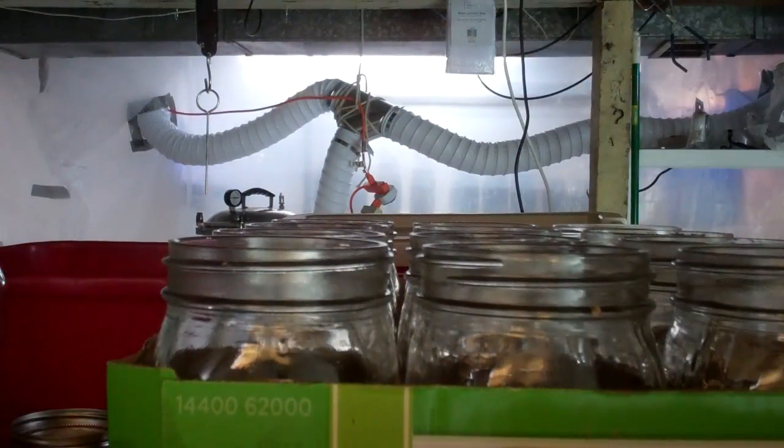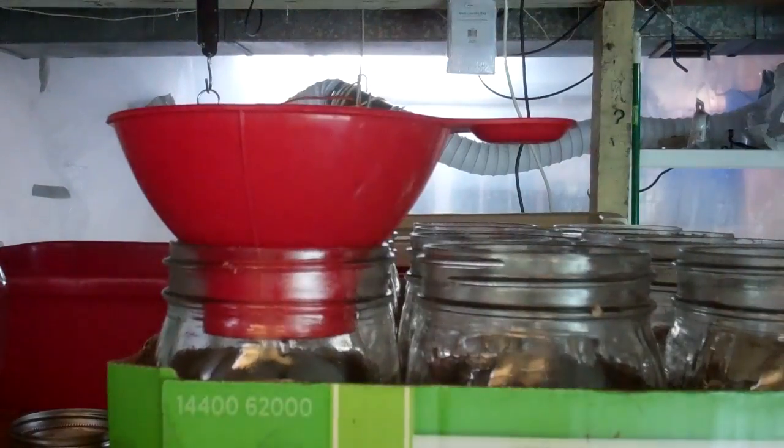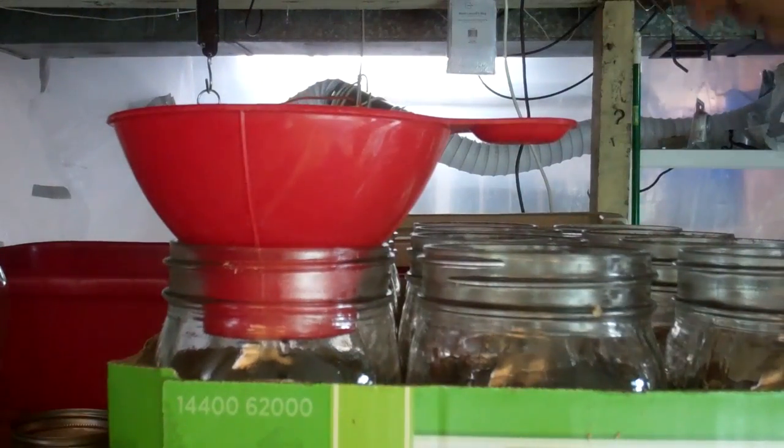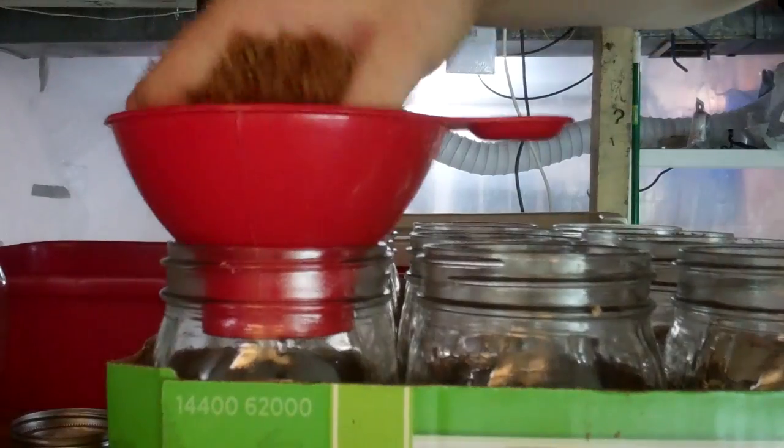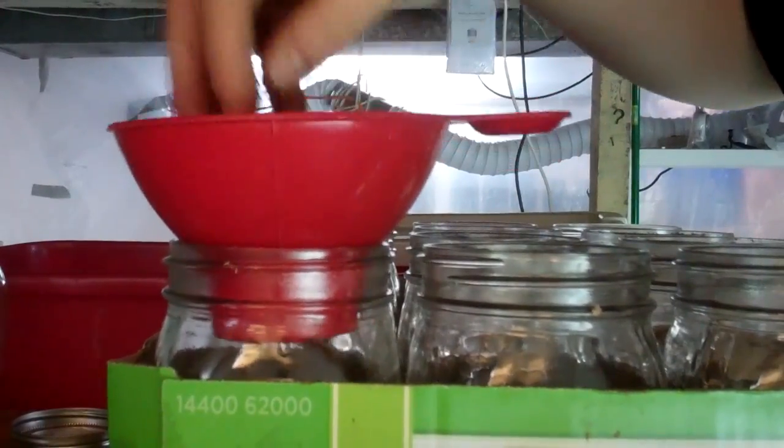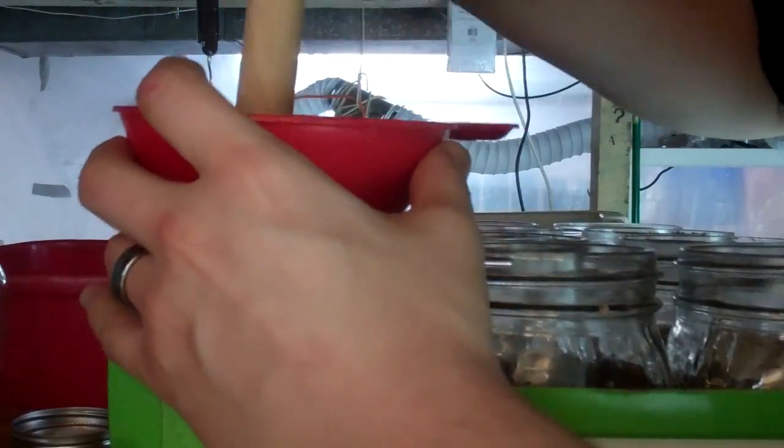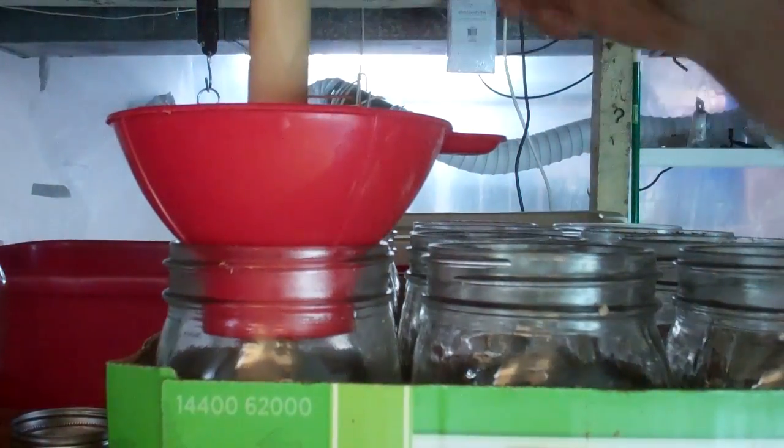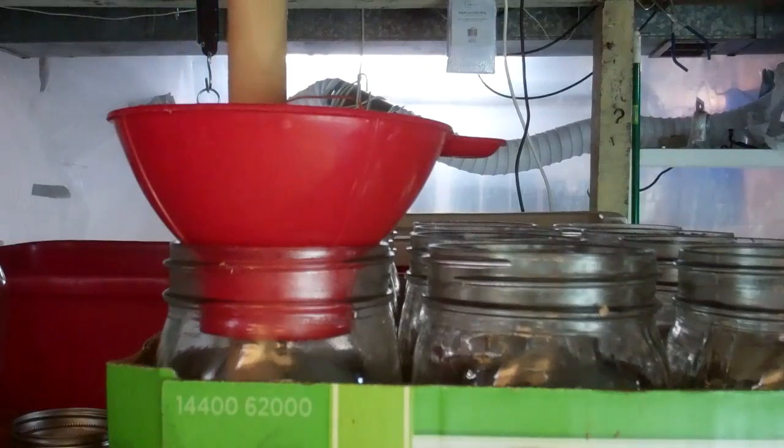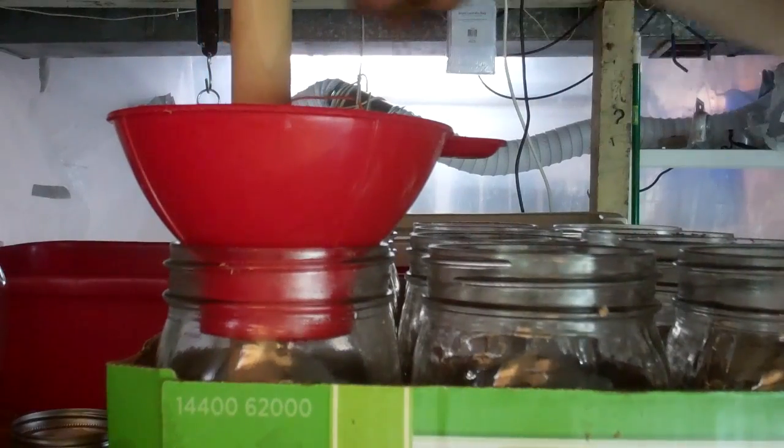So, I start out by simply putting a thin layer of the substrate down into the jar to get it started, so there's something in the bottom. Then I insert the dowel rod down into the center of the jar